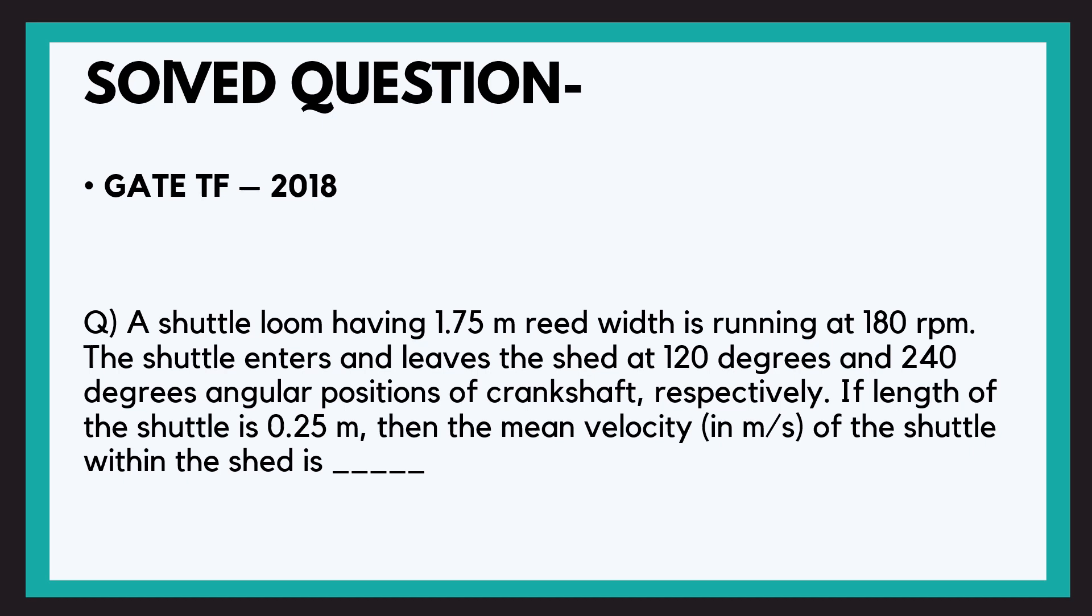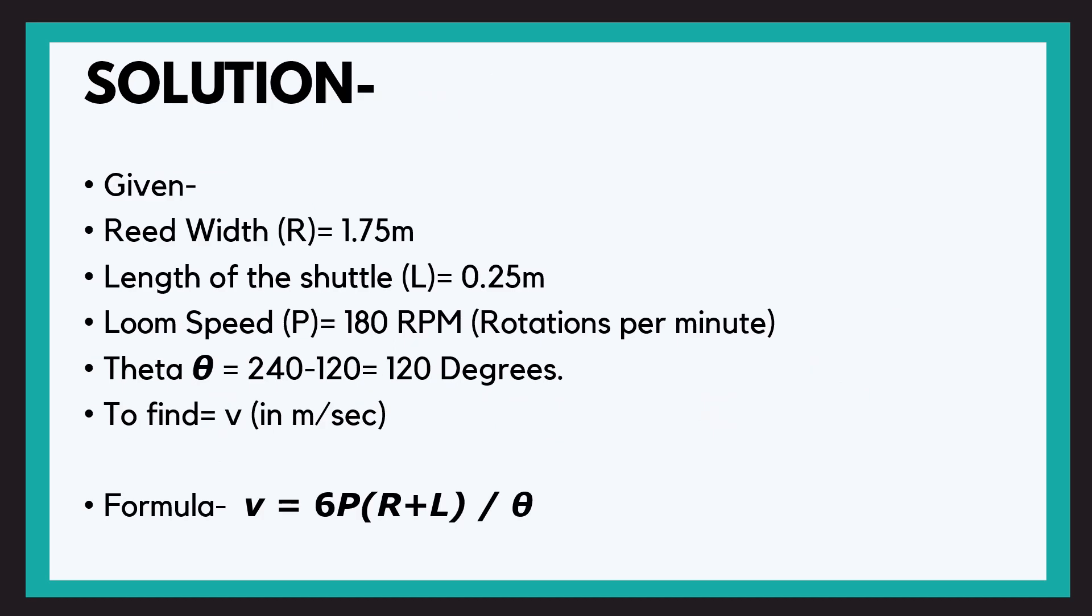We have to find the mean velocity. So that's very simple, just have a look. So we have with us reed width, that is R, 1.75 meters. The length of the shuttle, the effective length of the shuttle L, that is 0.25 meter. The loom speed, that is P, that is equal to 180 RPM or rotations per minute. And theta, that is 240 minus 120, that is 120 degrees. That is the crankshaft has rotated from 120 to 240 during the pick insertion. And we have to find the mean velocity V in meters per second.